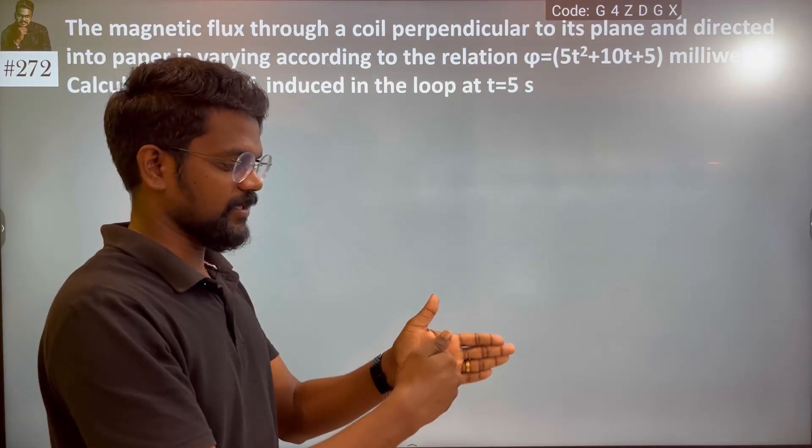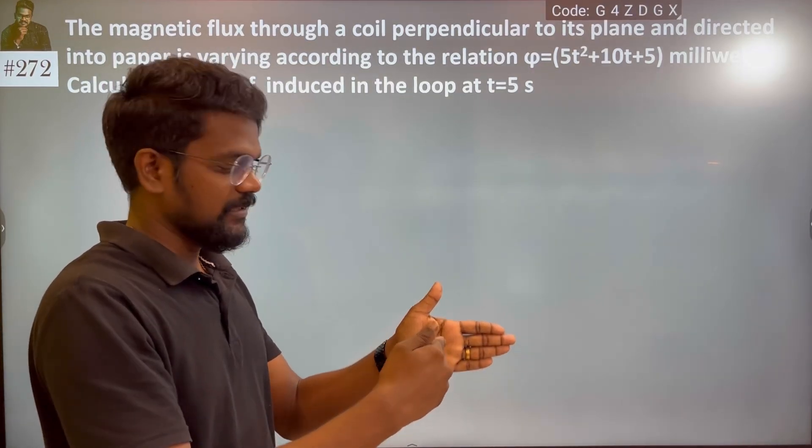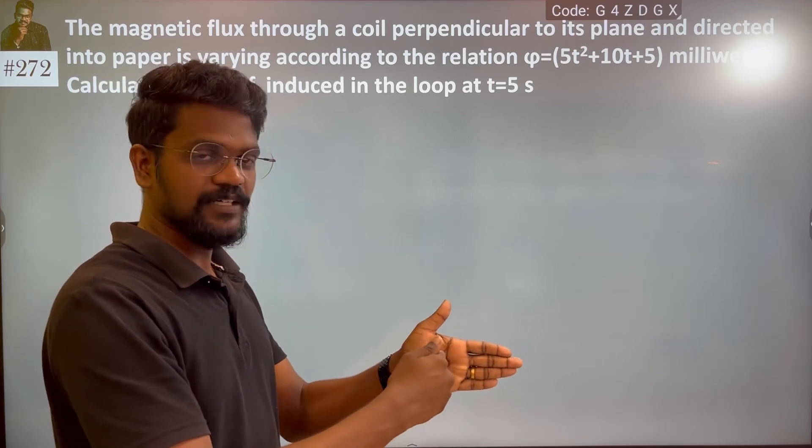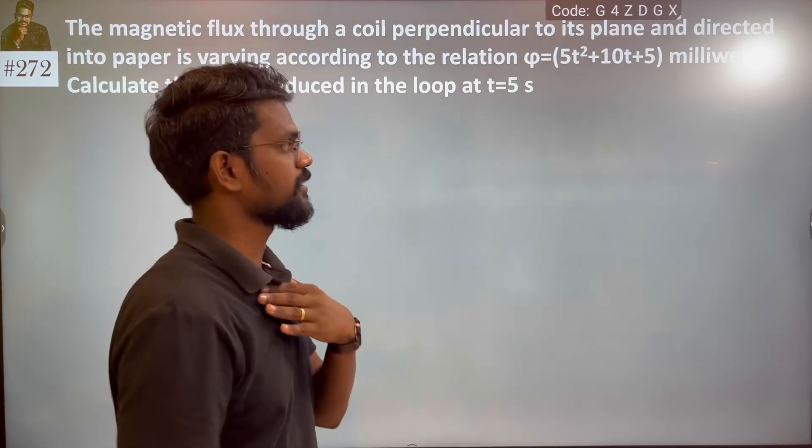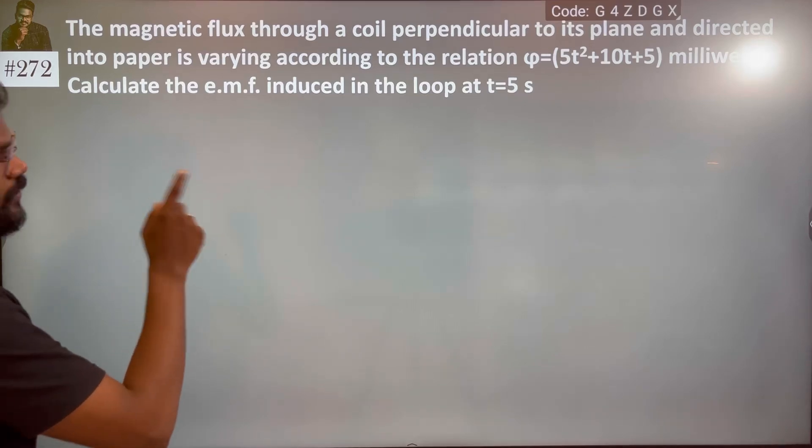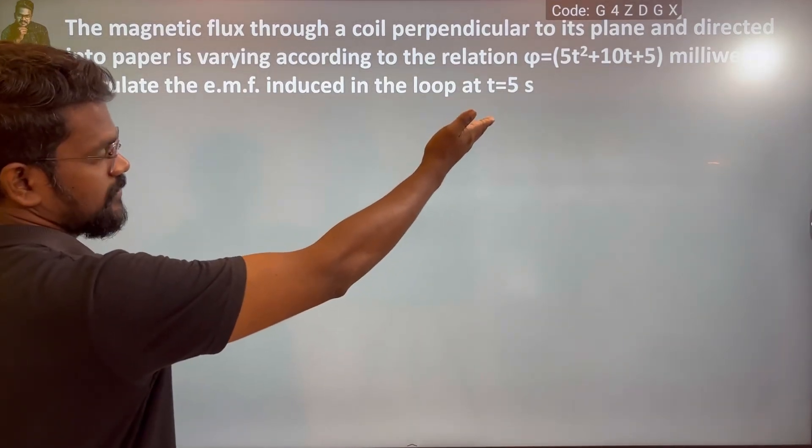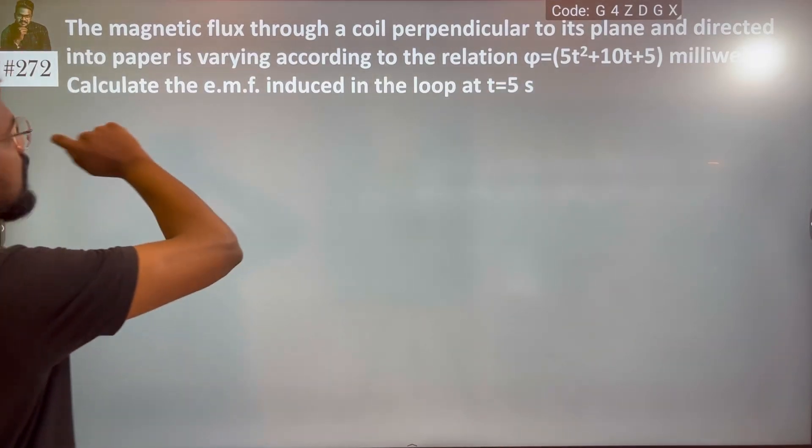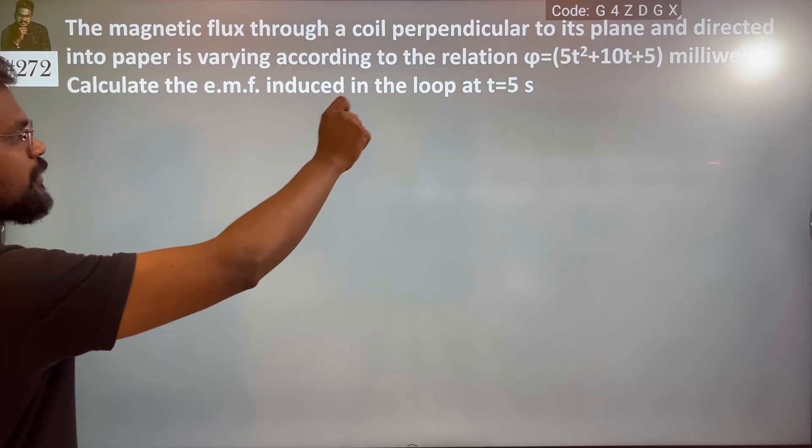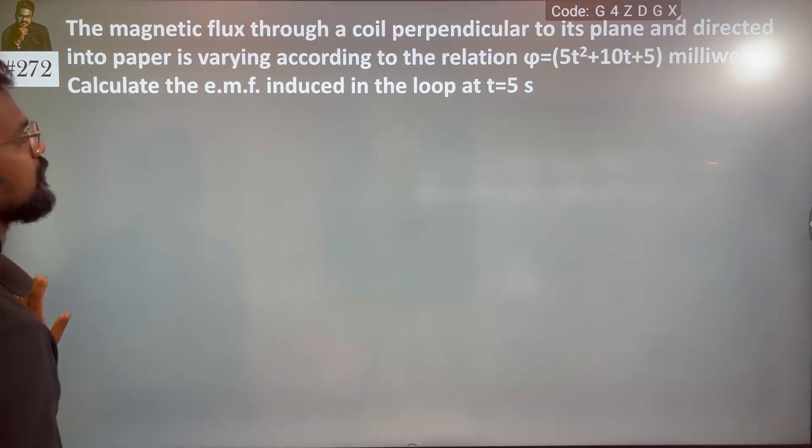the plane is perpendicular, so it is 0 degrees, and directed into the paper, varying according to the relation, flux is changing. Milliweber. Calculate the EMF induced in the loop at t equals 5 seconds.